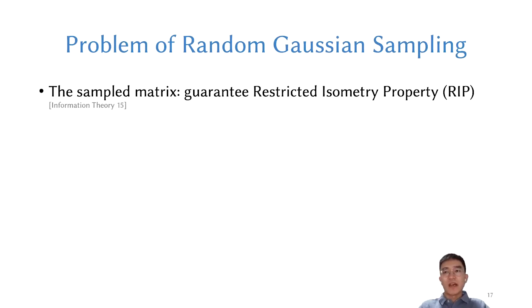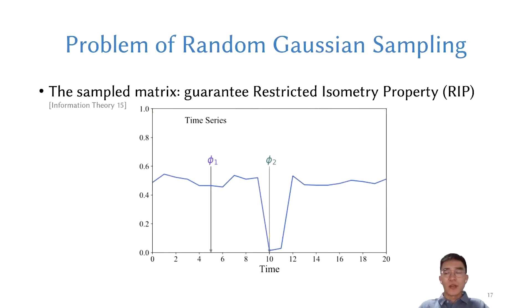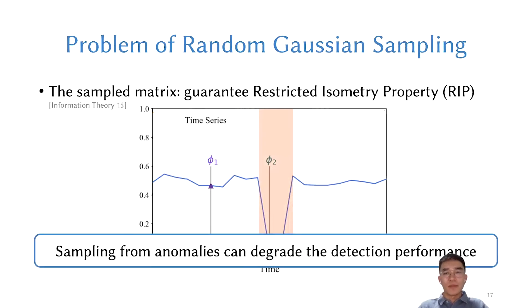There is another challenge. A starting point of CS is to sample from MTS. The sampled matrix needs to guarantee the Restricted Isometry Property called RIP. It has been proved that random Gaussian sampling satisfies RIP. However, random sampling methods likely sample some data points from anomaly segments. Let's look at two examples. Given a time series, we use random sampling to obtain two sampling points, phi1 and phi2. We can tell that phi2 is in the anomaly area. If we use this sampling point to reconstruct, we will obtain a time series with anomalies. Therefore, we need to improve the sampling algorithm.